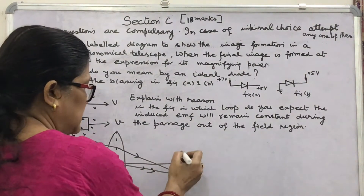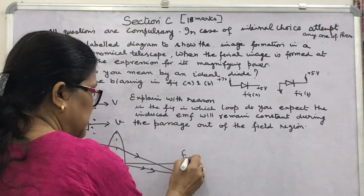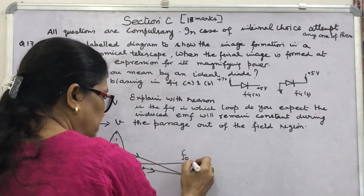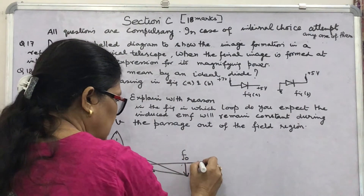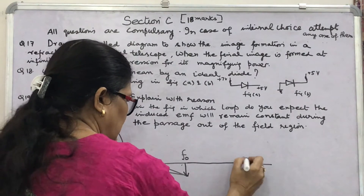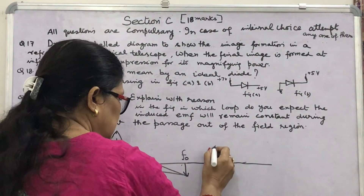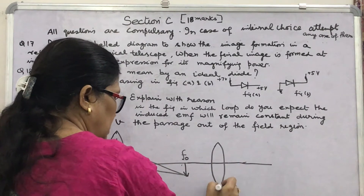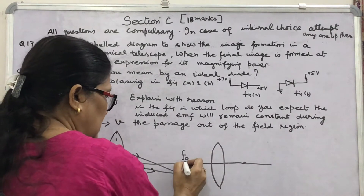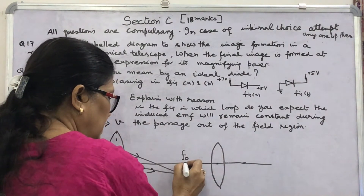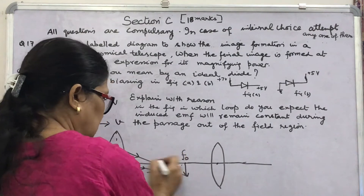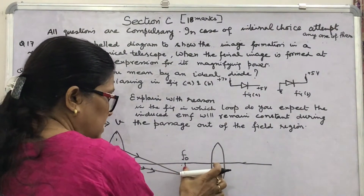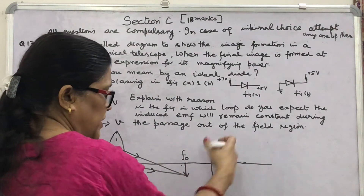This image is formed at the focus of the objective lens. To find the final image at infinity, this image should be at the focus of the other lens of the telescope — the eye lens or eyepiece. It is the smaller lens of small focal length. Its focal length should coincide with the same point FO, because only then the object placed at the focus of the eye lens will form the image at infinity.